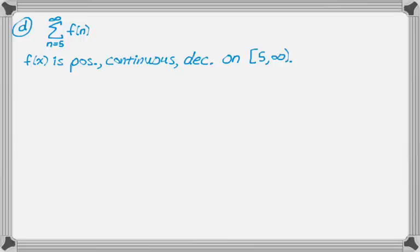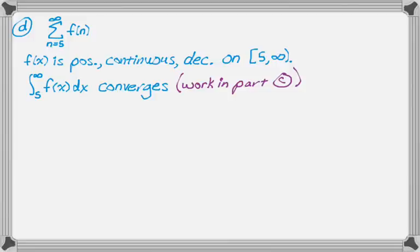And then, so that's the setup for using the integral test. We already did all the work, so we know that the integral from 5 to infinity of f of x dx converges, and the reason we know that is that we did part c, so I'm going to mention that just so a reader would know that the work is in part c, and then we can draw a conclusion. So therefore, the sum from 5 to infinity of f of n also converges, and it converges by the integral test, and I'm pretty sure that's all you need to do there.